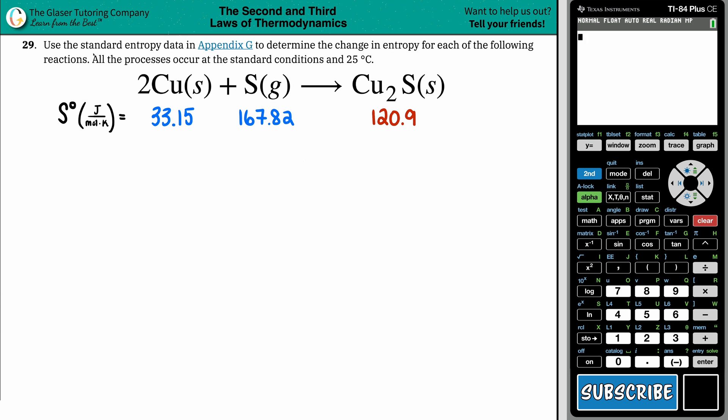Number 29. Use the standard entropy data in Appendix G to determine the change in entropy for each of the following reactions. All the processes occur at the standard conditions and at 25 degrees Celsius. So we have 2Cu(s) + S(g) → Cu₂S(s).